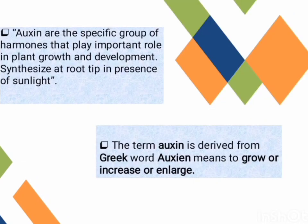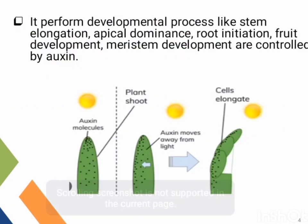Auxin is basically a specific group of hormones that play a role in plant growth and development. It synthesizes root tips in the presence of sunlight. The term Auxin is derived from the Greek word 'Auxine', which means grow, increase, and enlarge.